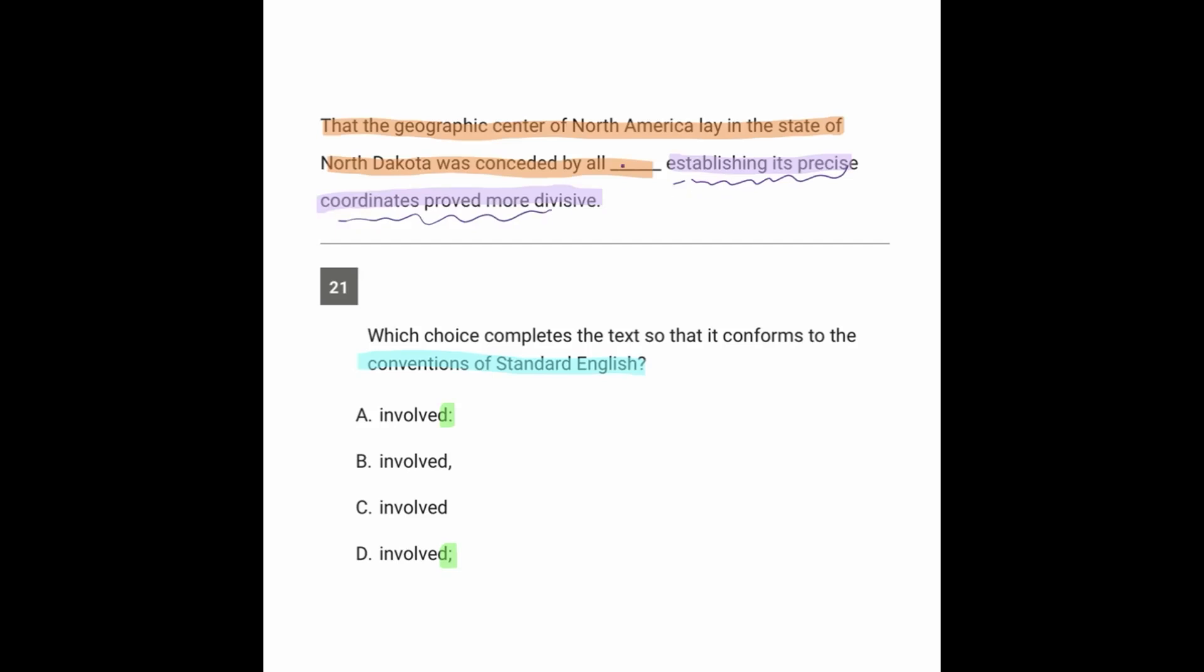It's talking about a new idea. The fact that it lay in North Dakota was conceded by all. Establishing the coordinates was more divisive. So it's a whole new second idea tacked on to the first idea. Why is it being tacked on? Because there is some kind of great relationship that the writing needs to kind of draw out. But it's not necessarily a description of the first part.